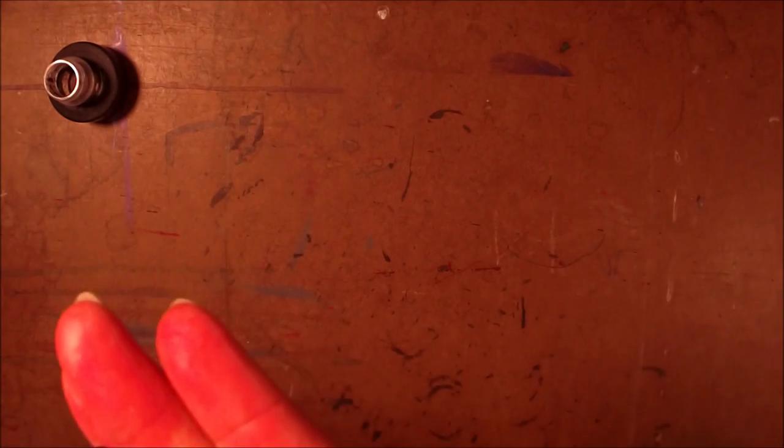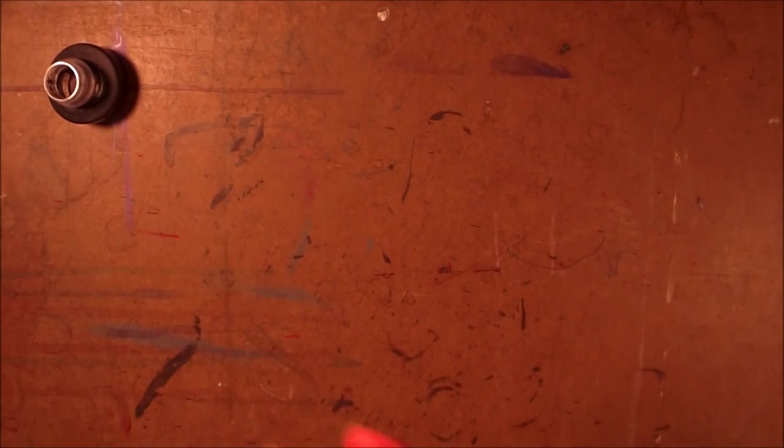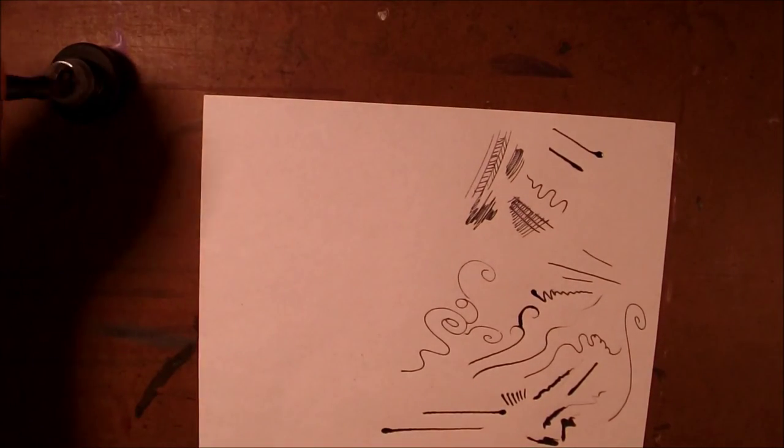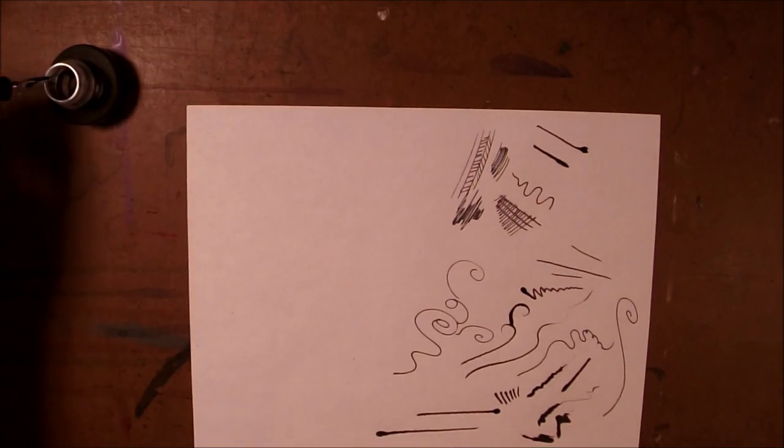So now we have the smaller one, and I believe this is the 512. Yeah, this is the 512 of the Speedball Artist set. This is the smaller nib, and I'm going to work on this side of the paper with the smaller one just to kind of see if there's any real difference with it.